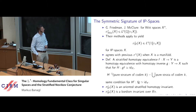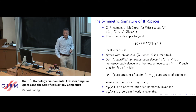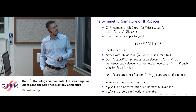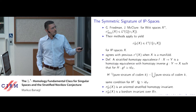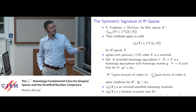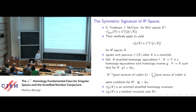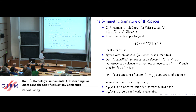Stratified homotopy equivalences have already appeared in previous talks, so I won't define them. In the singular context, this symmetric signature has analogous properties to the class for manifolds: it is an oriented stratified homotopy invariant and a bordism invariant over Bπ, where now we are talking about IP bordism.